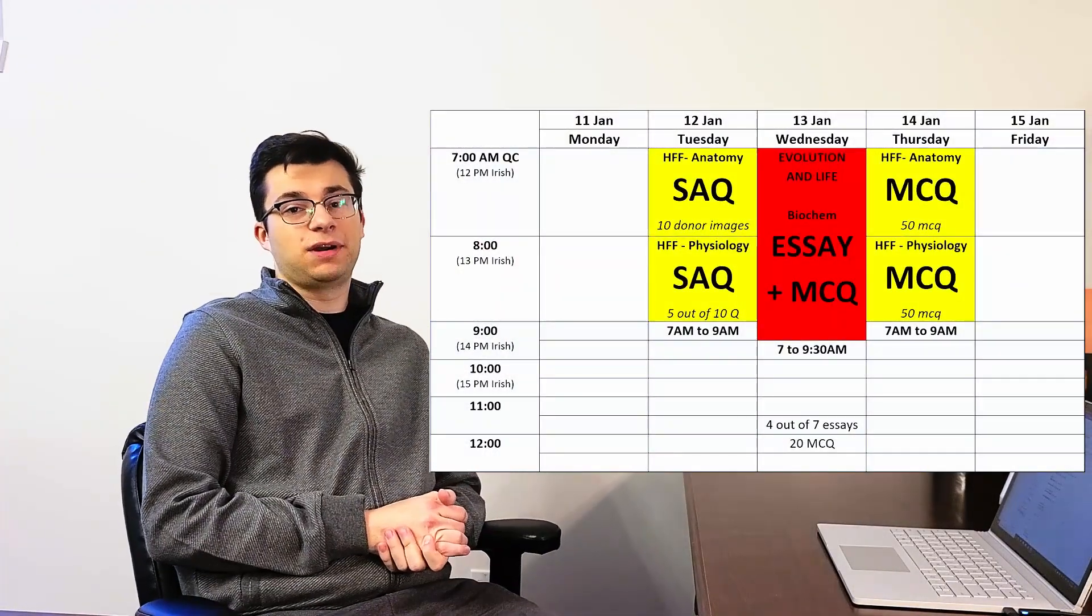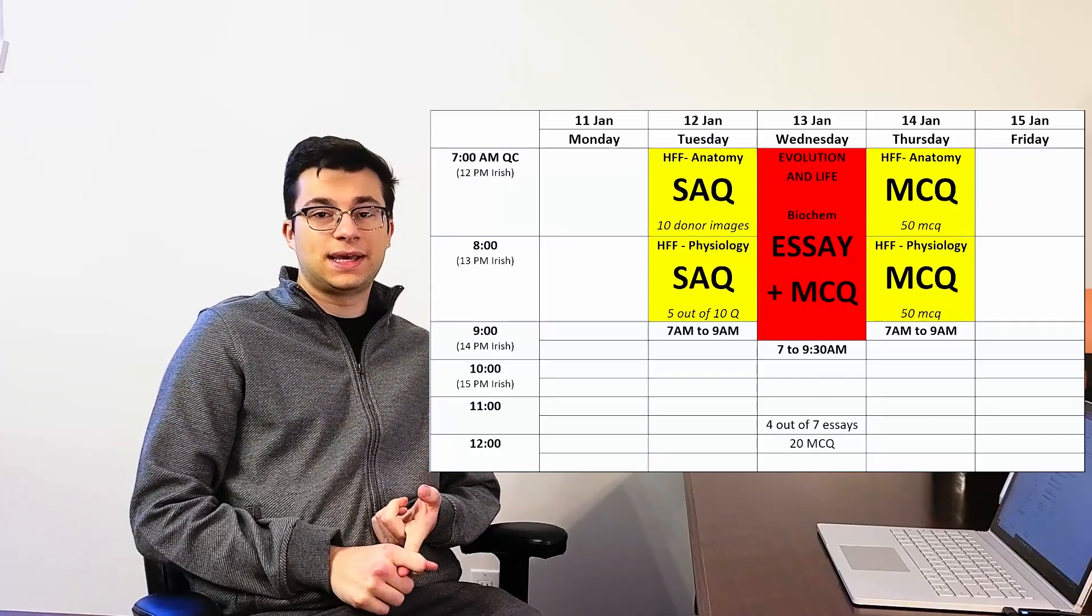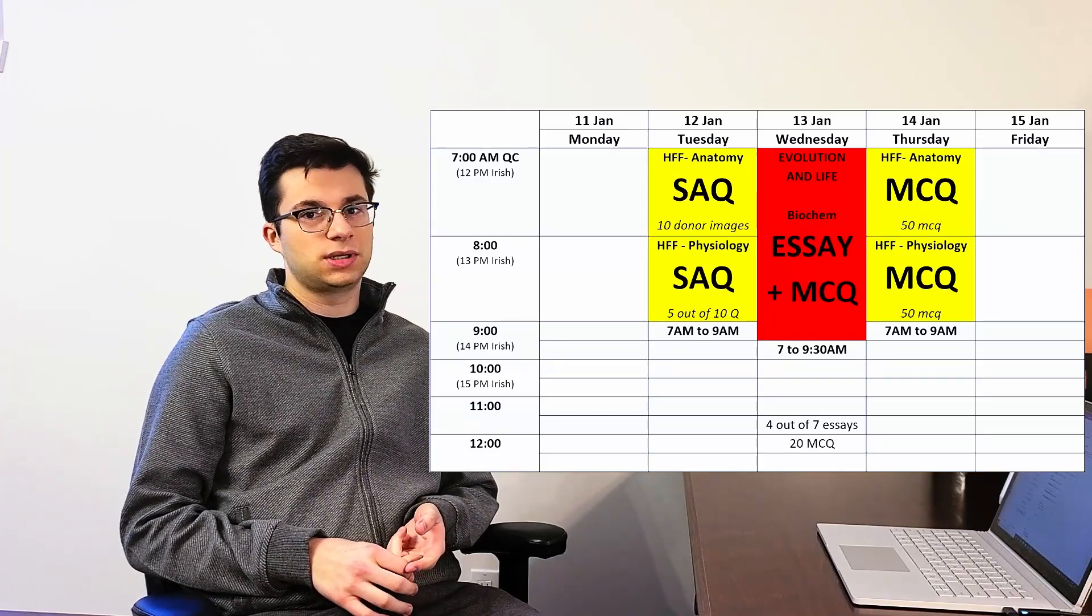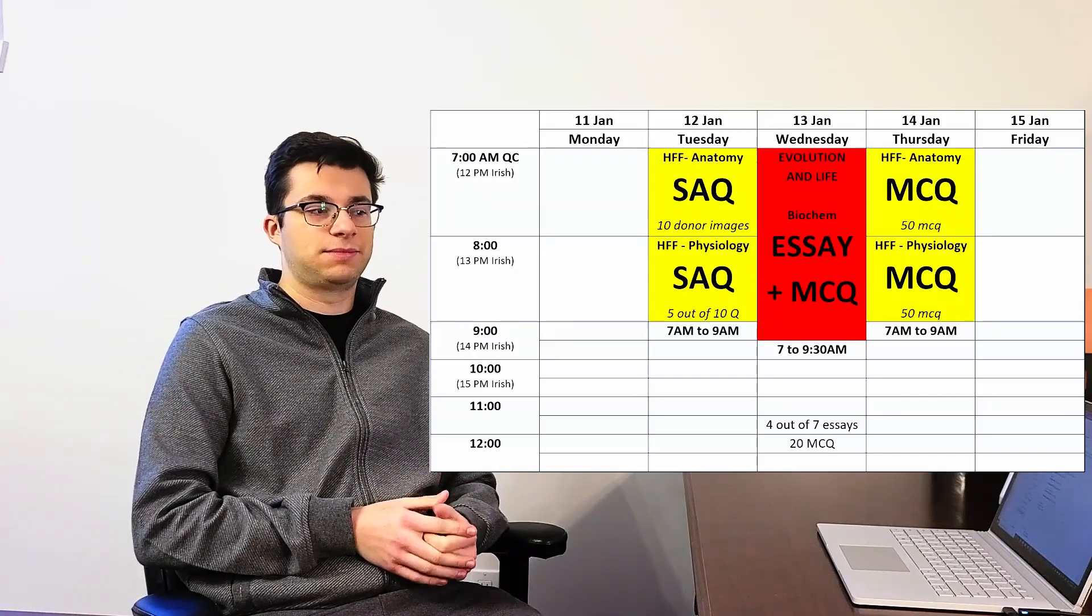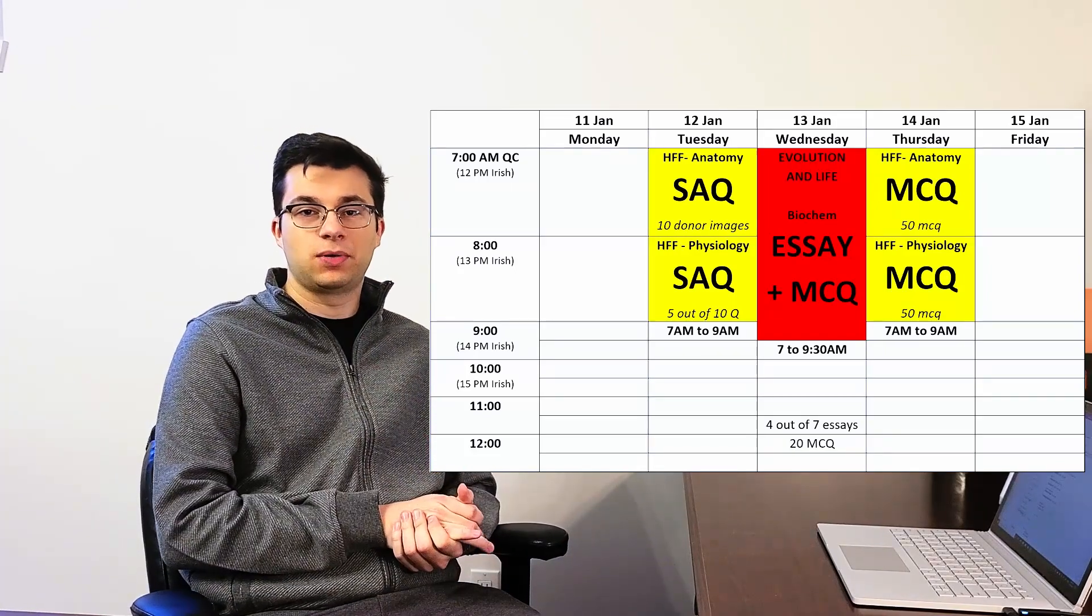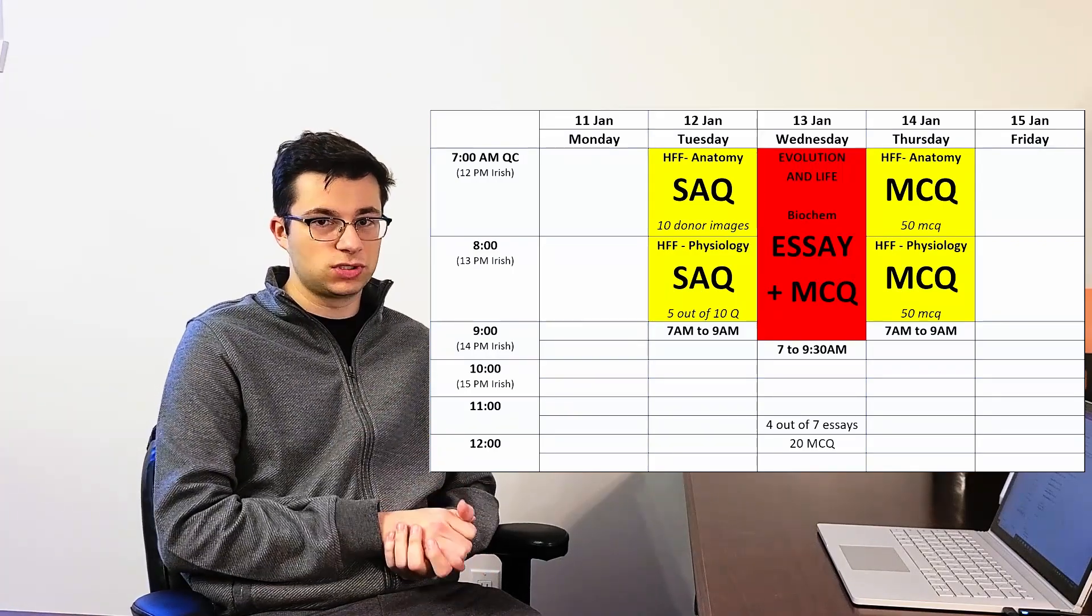So on January 12th, I had my first two exams of Human Form and Function. In the morning, I had the anatomy SAQs and then afterwards I had the physiology SAQs. It's part of the same bigger module, but there were two different exams on Blackboard, which is the platform that Trinity uses for the exams. And then for Wednesday, I had my biochemistry exam. And then on Thursday, again, I had anatomy and physiology, but this time it was the MCQs.